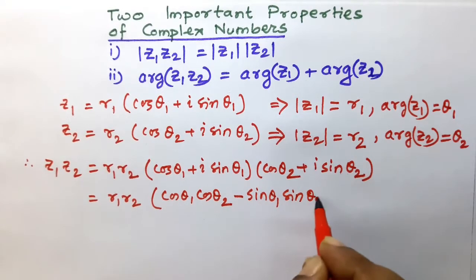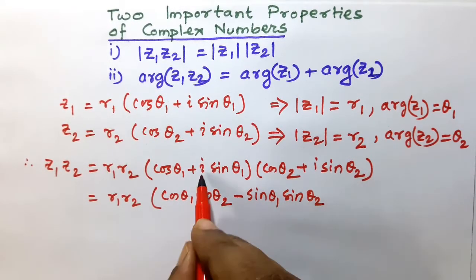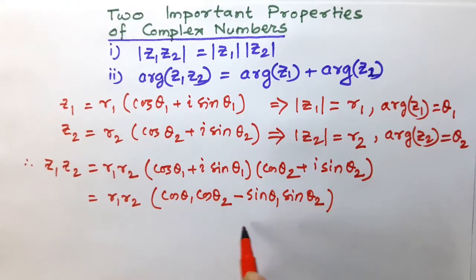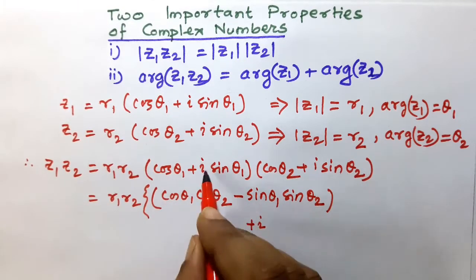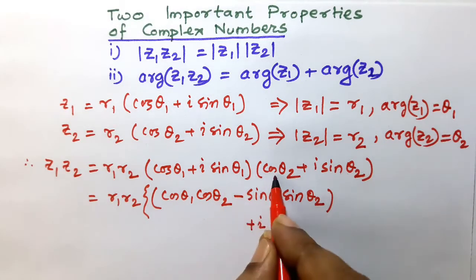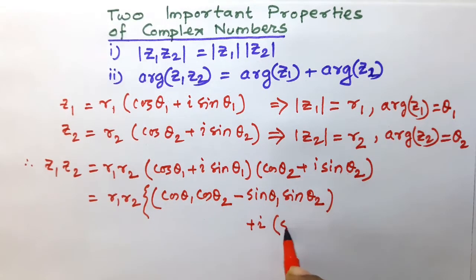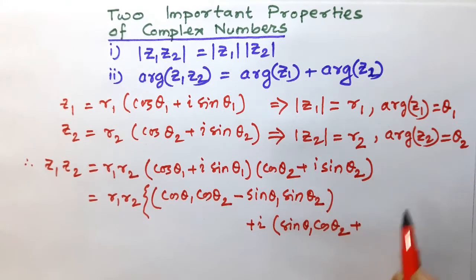So minus sin θ1 sin θ2 plus i, take in another bracket, plus i into sin θ1 cos θ2 plus cos θ1 sin θ2.